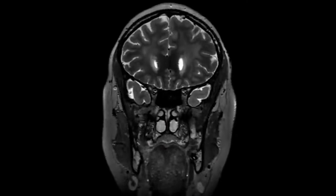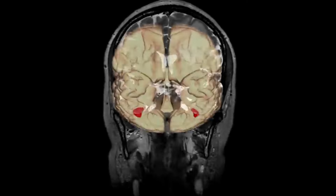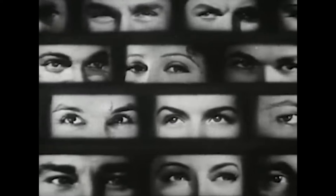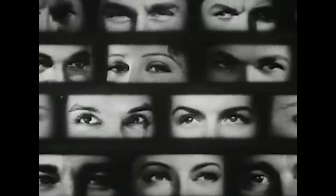Pareidolia is not limited to individuals with mental disorders — it is a common and normal part of human perception. It occurs when the brain's pattern recognition systems, which are essential for identifying objects and faces in our environment, become activated in response to stimuli that do not actually contain meaningful patterns.